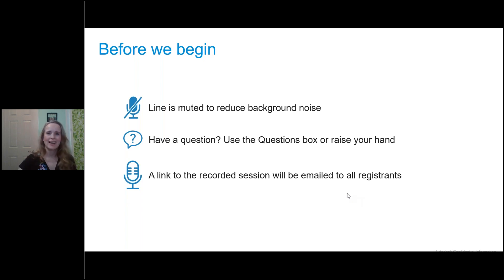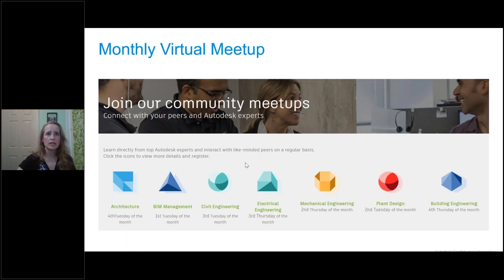Any questions that we don't get to today, we will bring them up offline and answer those directly via email. If you'd like to ask questions live, I can unmute you — just put a comment in the Q&A or raise your hand in the attendees panel. As a reminder, we have meetups for architectural, BIM management, civil engineering, electrical, mechanical, and structural engineering. The building engineering meetup is the fourth Thursday of every month. Today we're focusing on structural.